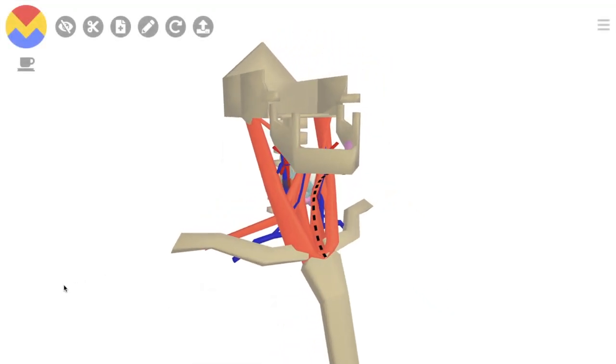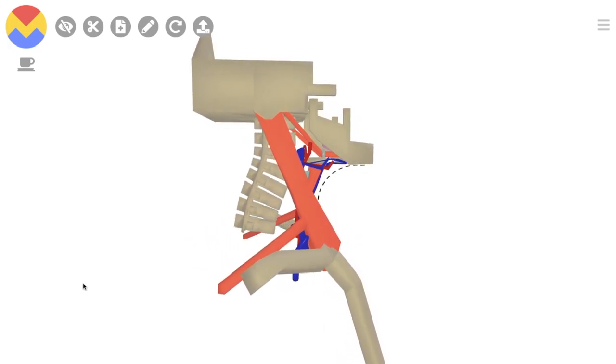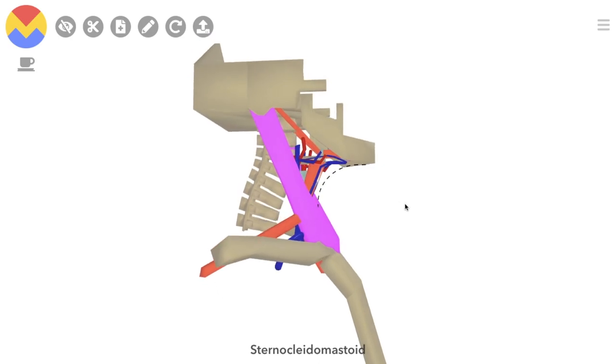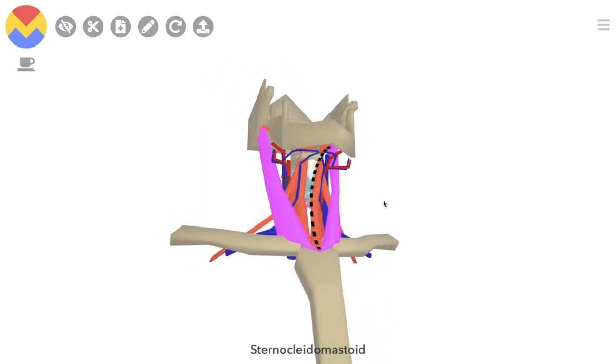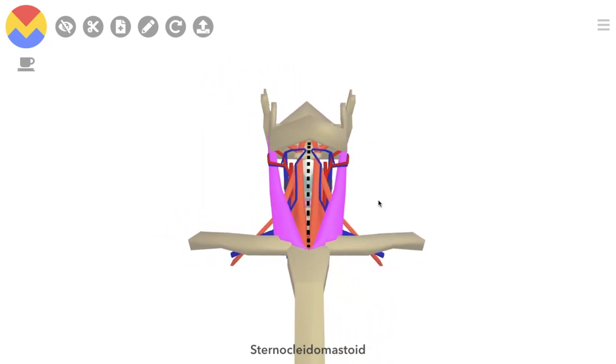The neck is packed with anatomical structures. We divide it into anterior and posterior triangles separated by the sternocleidomastoid muscle, in order to place these structures into simple categories. We'll start with the anterior triangle of the neck.